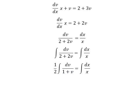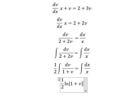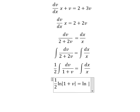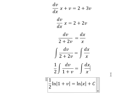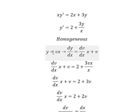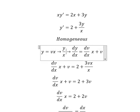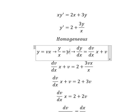We integrate both sides. The number 2 and number 2 we put outside. The integral of this gives us ln of the absolute value of 1 plus v. The integral of x over x gives us ln of the absolute value of x, and we add the constant c. Now for v, we substitute back using v equals y over x, and we divide both sides by x.